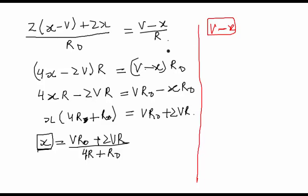V minus X when we do it would be nothing but V of 4R plus R0 minus VR0 minus 2VR upon 4R plus R0. I am just doing X minus V here.